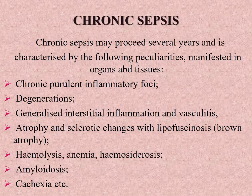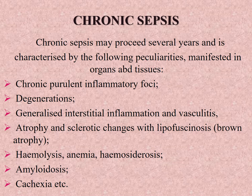Chronic sepsis may proceed for several years and is characterized by the following peculiarities manifested in organs and tissues: chronic purulent inflammatory foci, degenerations, generalized interstitial inflammation and vasculitis, atrophy and sclerotic changes, lipofuscinosis, brown atrophy, hemolysis, anemia, hemosiderosis, amyloidosis, cachexia, etc.